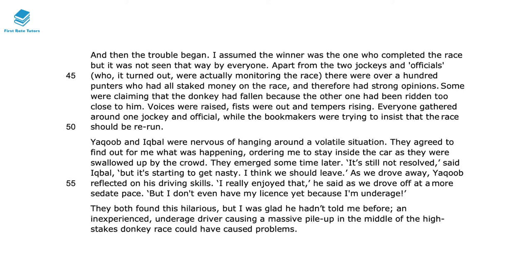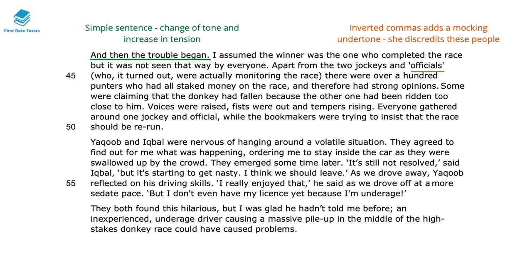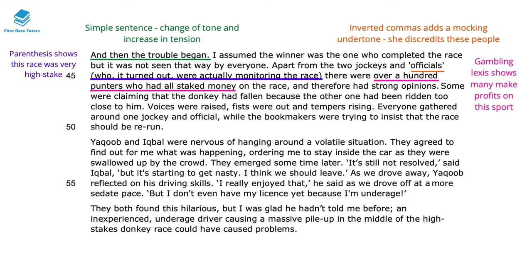How she ends this passage is really funny and very humorous. The simple sentence 'and then the trouble began' changes the tone — there's a sudden increase in tension, shifting from the crazy entertaining race to people starting to argue. She uses inverted commas to refer to the 'officials', adding mocking undertones and discrediting those who are also creating the argument. The parenthesis shows this race was really high stakes — these so-called officials and lots of other people were really monitoring the race. It wasn't simply for fun as she had initially assumed — actually there's a lot of money riding on it. She talks about over 100 punters who had staked money, and there's a lot of gambling lexis — punters, money, bookmakers — all gambling language showing how many people in this region make profits based on this sport.